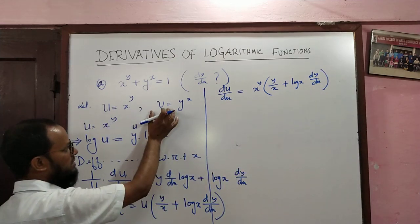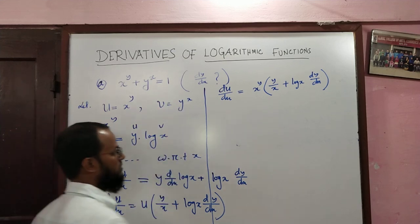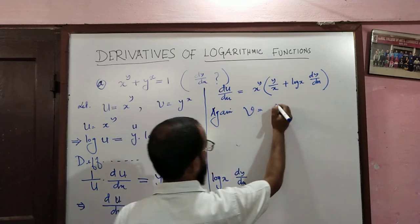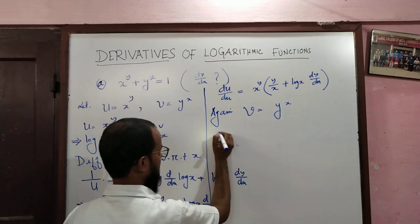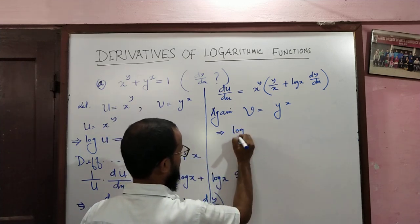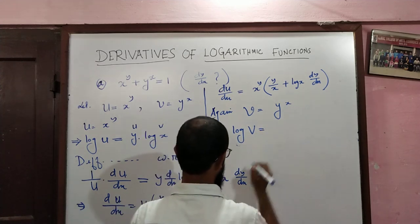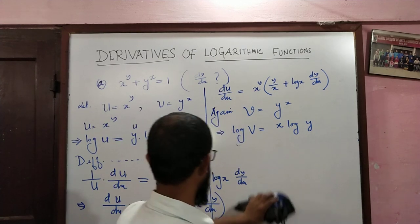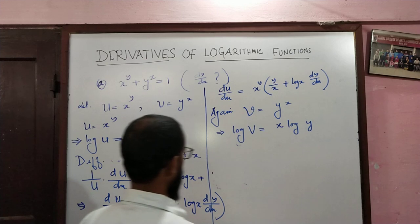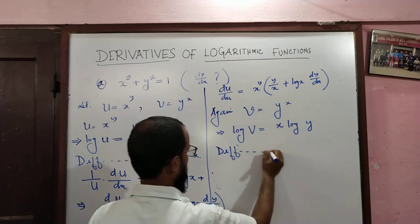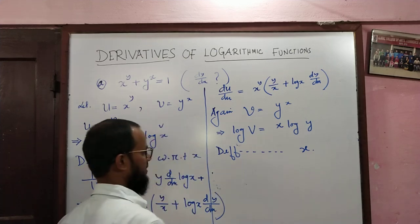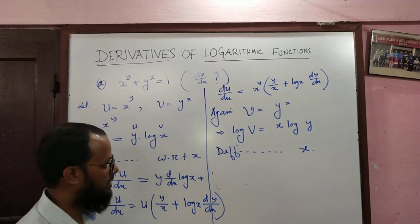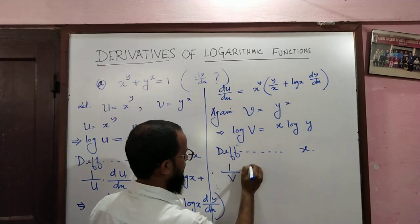Now we find dv/dx, the derivative of v equals y to the power x. In the same process, taking logarithm on both sides gives log v equals x times log y. Differentiating both sides with respect to x, we get 1/v times dv/dx on the left side.